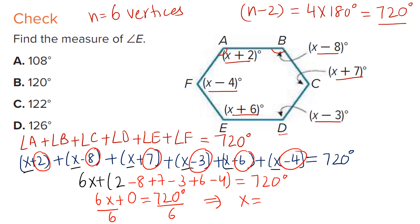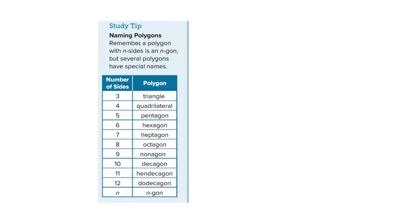So x is going to be 120 degrees. Now if you look at the option, you might put B as the answer. But read the question well. Measure of angle E is asked. Angle E. That means x plus this. So x plus 6 degrees is the measure of angle E which is going to be 120 plus 6, 126. So your answer is going to be D.